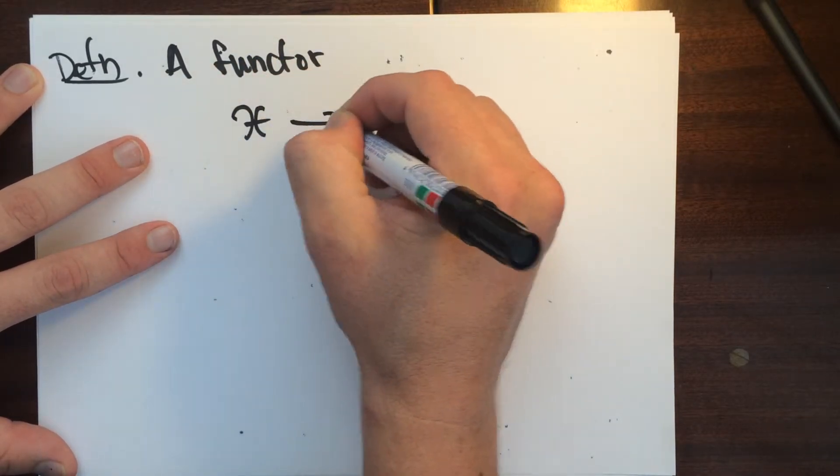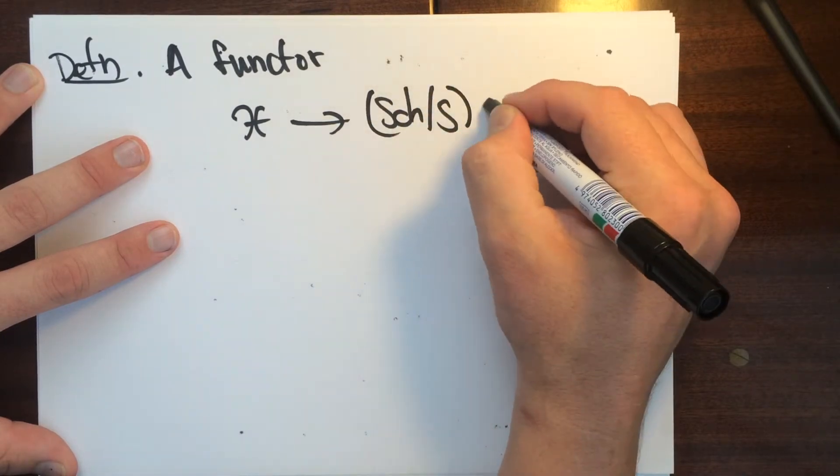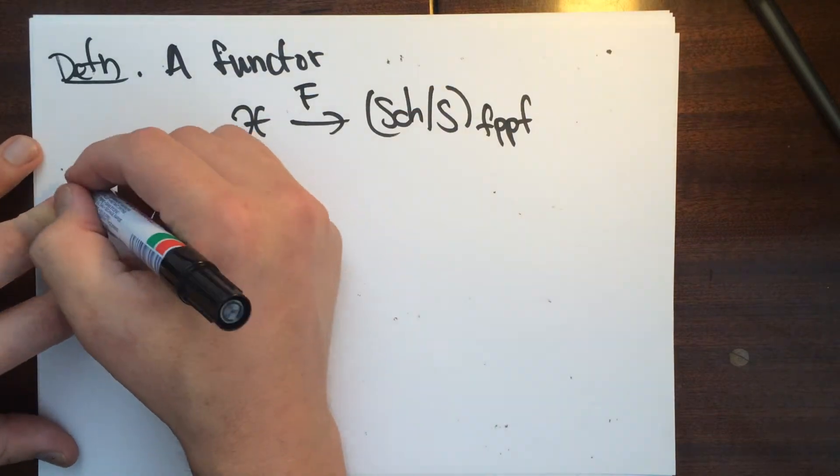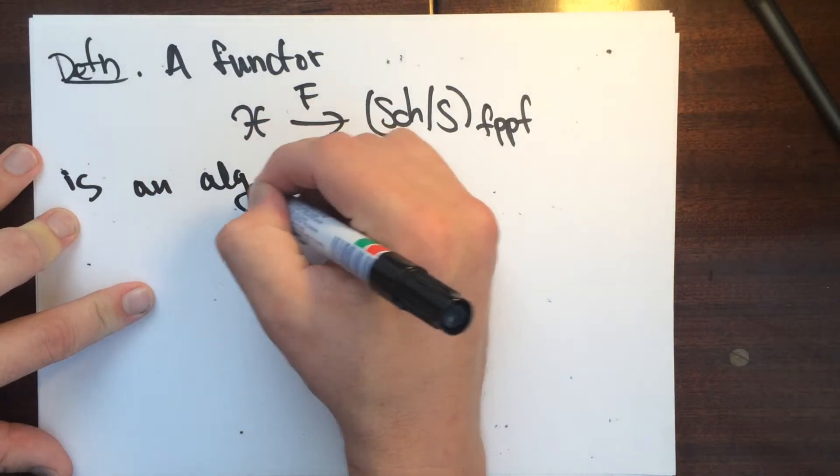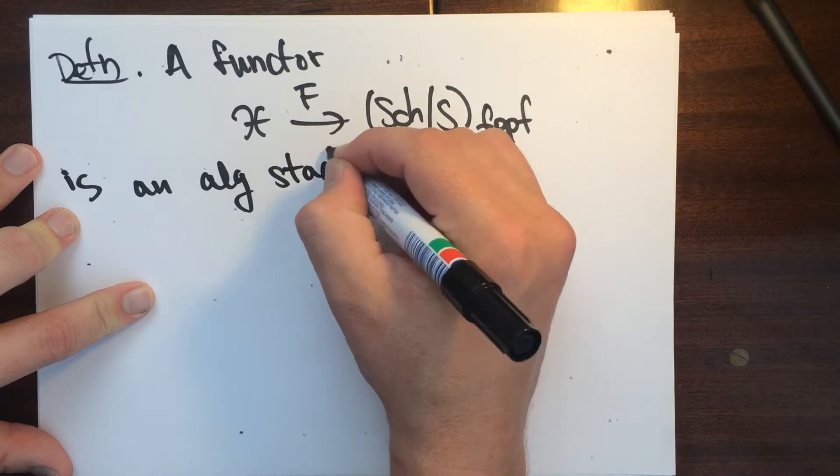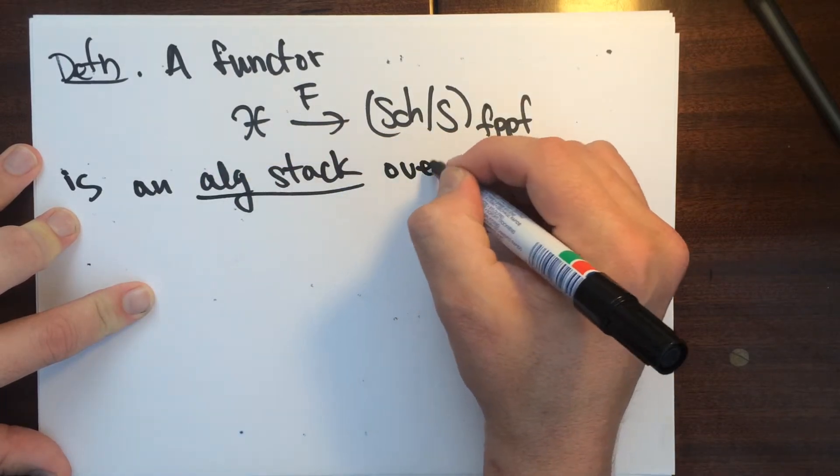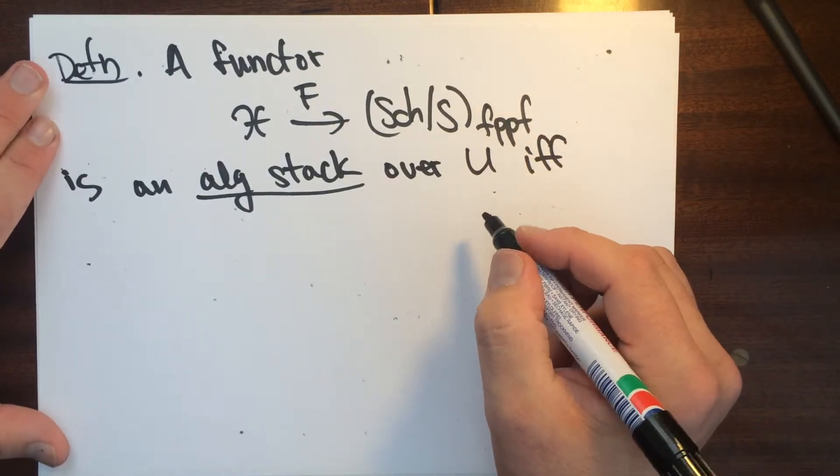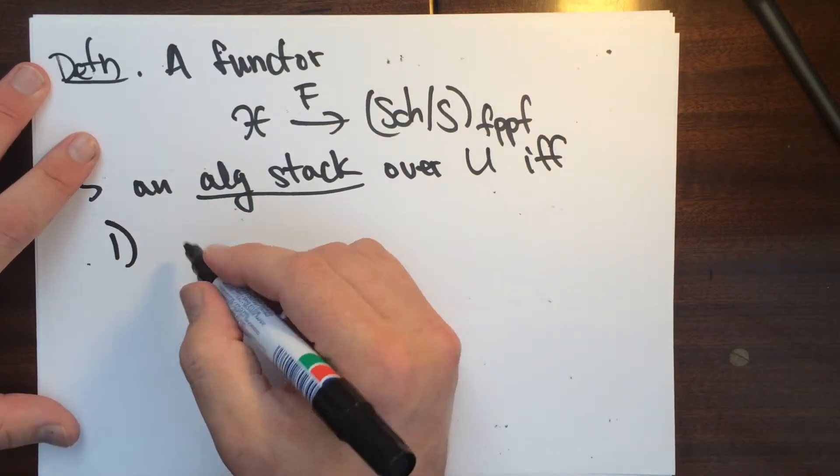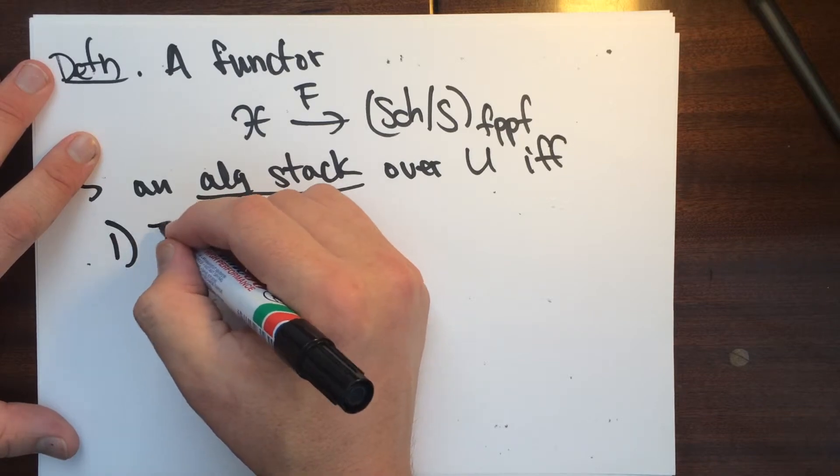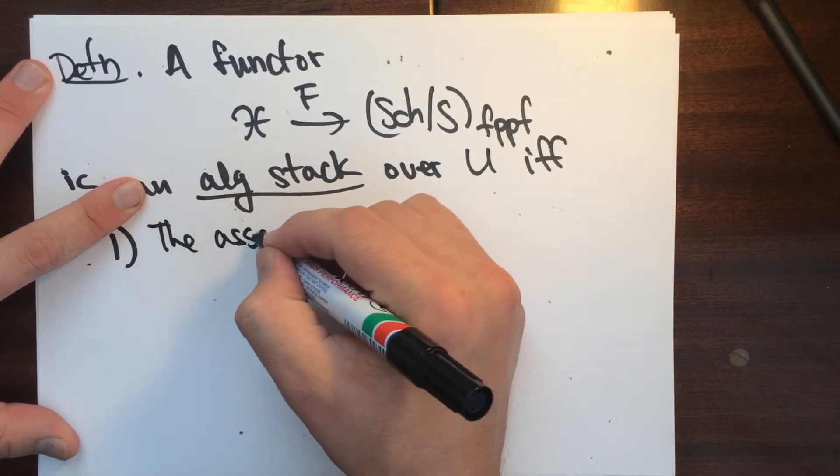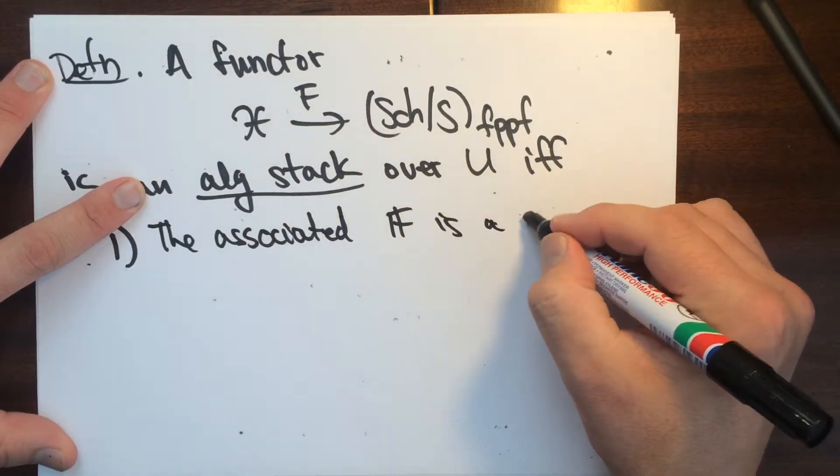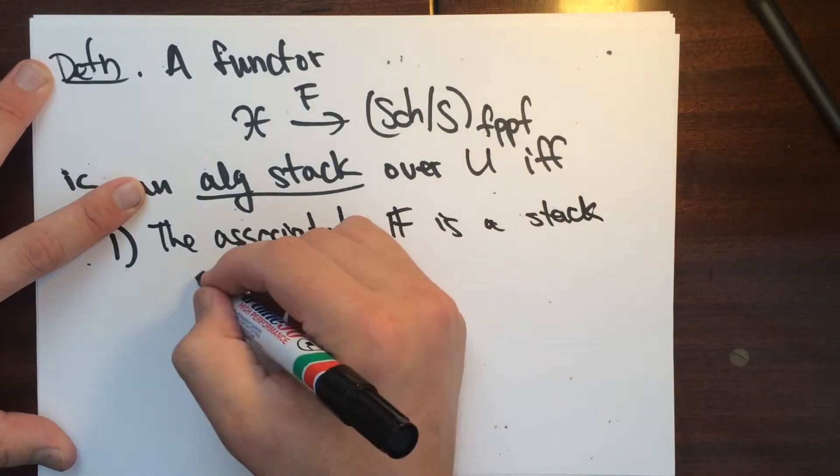X to, let's call this F is an algebraic stack over U if and only if it satisfies the following three axioms. One, the associated F is a stack in groupoids.